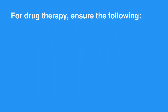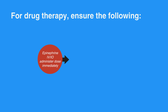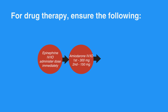For drug therapy, ensure the following. Epinephrine IV/IO dose: 1 mg — administer as soon as possible, then every 3 to 5 minutes after. Amiodarone IV/IO dose: first dose is 300 mg bolus, second dose is 150 mg.